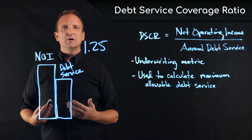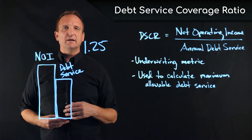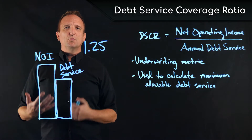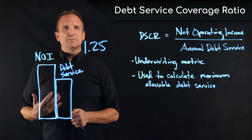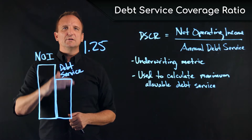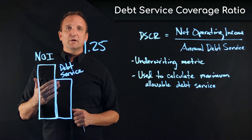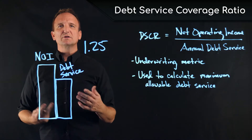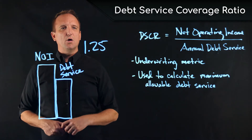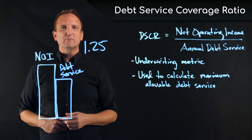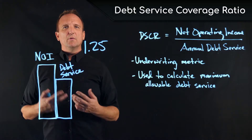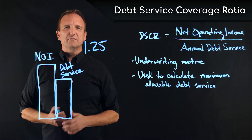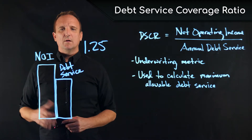DSCR sets a limit on how much risk the lender is going to take in terms of what they loan compared to the cash flow on the property. They don't want to put borrowers in a position where they have barely enough net income to cover the debt service, or even worse, not enough. So the debt service coverage ratio builds in the cushion that lenders want — it typically runs about 0.25 over the debt service amount.